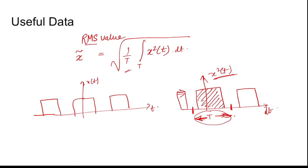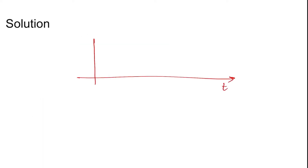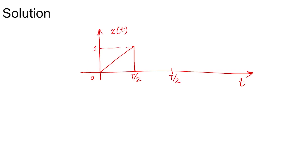Coming to the solution: for this kind of signal x(t), from 0 to T/2 it is a ramp, and from T/2 to T it is 0. We only need to consider one repeating period — you don't need to consider the whole signal, just consider one period of interval T.